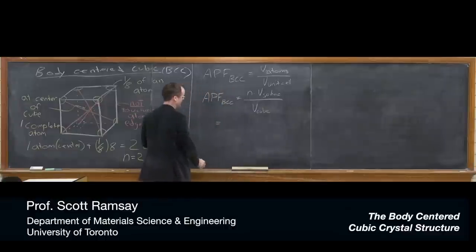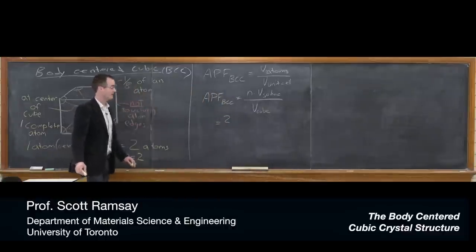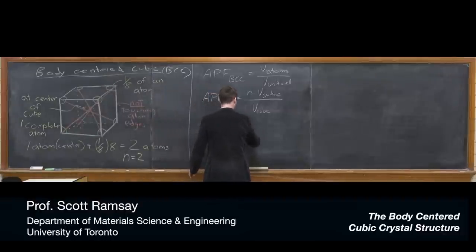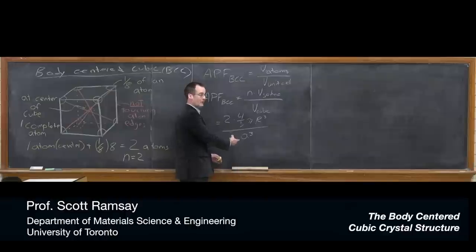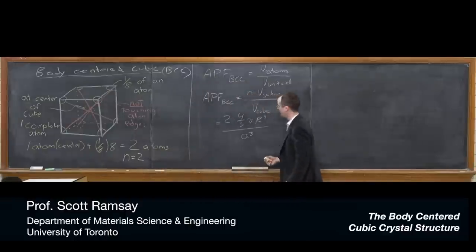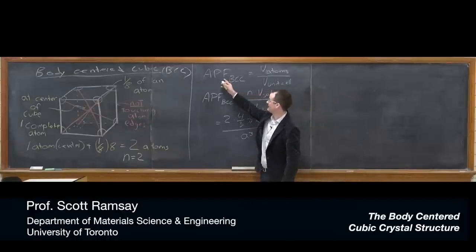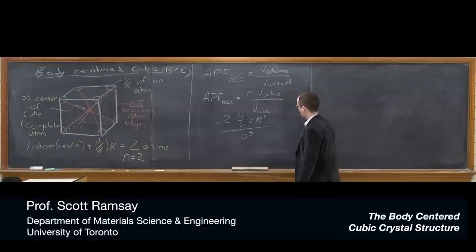Which is going to be two—we just worked it out, there's two atoms inside the BCC unit cell—times four-thirds pi r cubed, the volume of a sphere, divided by a cubed. But we've got this a in the denominator and r in the numerator. We'd like to get rid of those to give ourselves a fraction. That's what we're after: atomic packing factor, or atomic packing fraction.